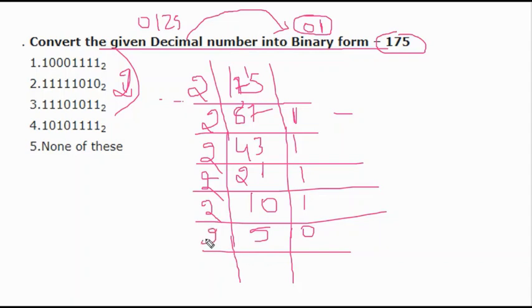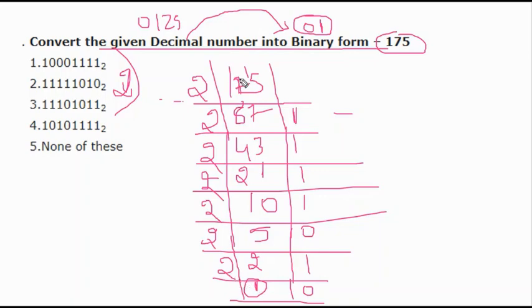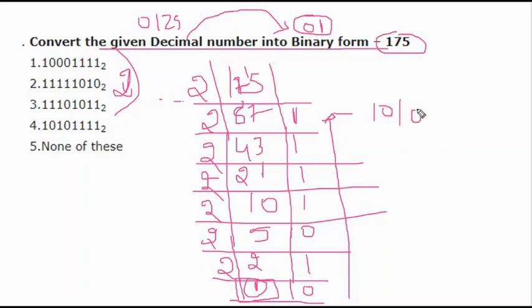5 ÷ 2 = 2, remainder 1. 2 ÷ 2 = 1, remainder 0. Now 1 is the least digit that cannot be divided further by 2 in this format. To write the binary form, start from this last quotient (1) and read the remainders upward. The result is 1, 0, 1, 0, 1, 1, 1, 1. Checking the options: the answer is 10101111.